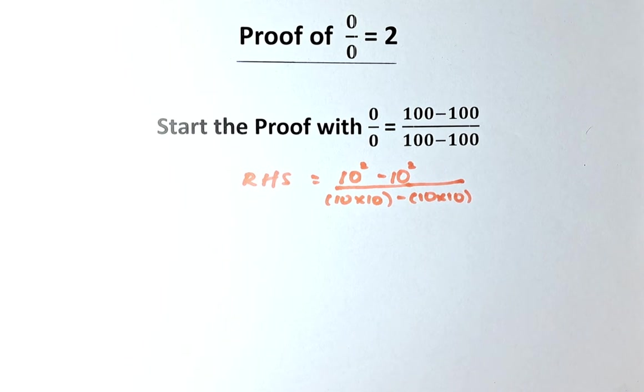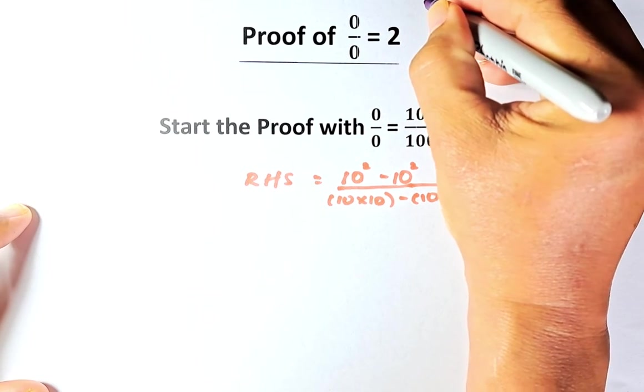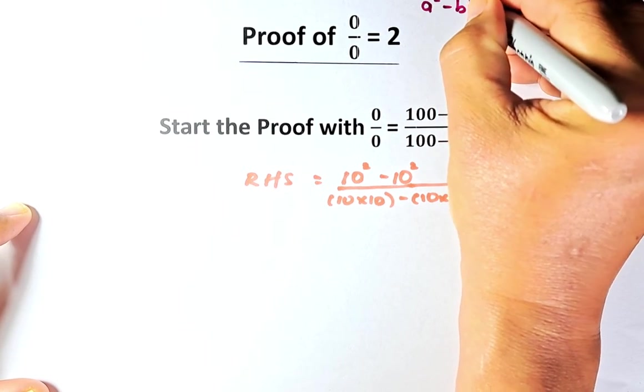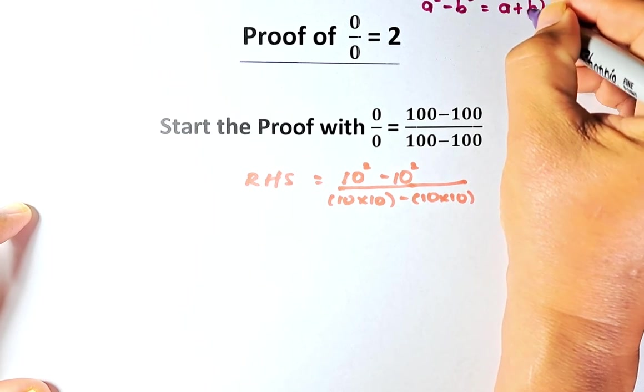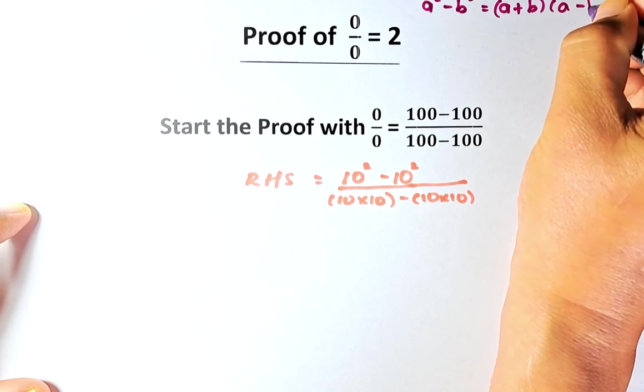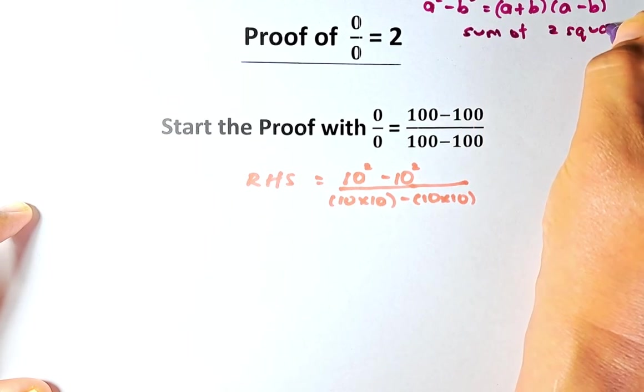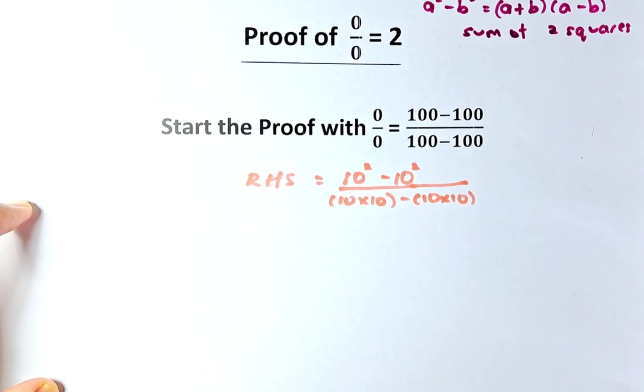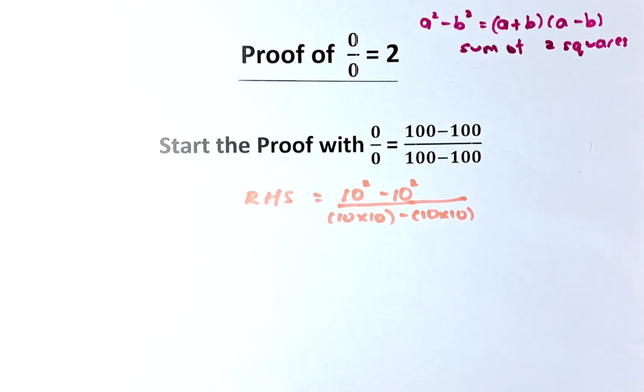So we are on the right track. So now, if you know 10 squared minus 10 squared, this rule you need to know. A squared minus B squared equals to A plus B, A minus B. This is called the sum of 2 squares. You have learned this in calculus. So A squared minus B squared is equal to A plus B, A minus B. So there's no big issue on that.